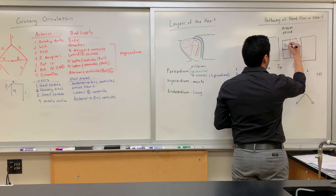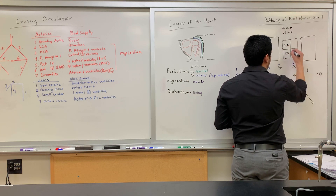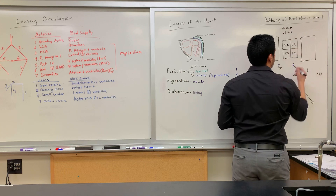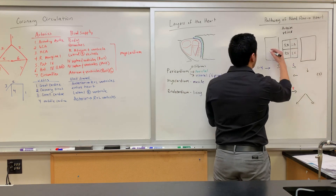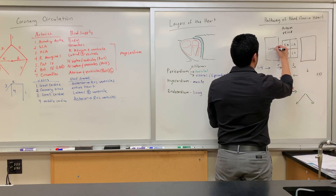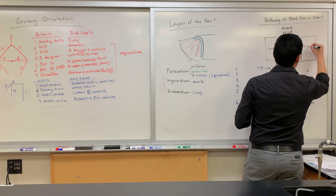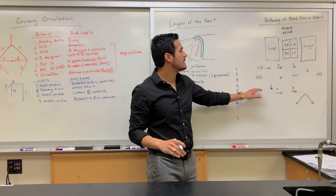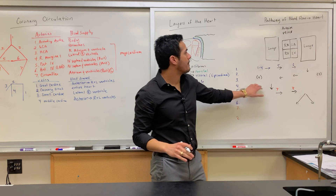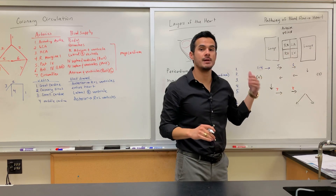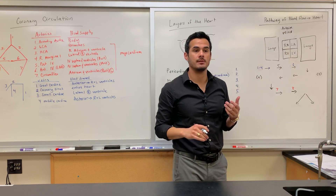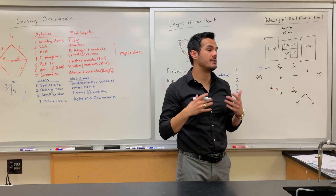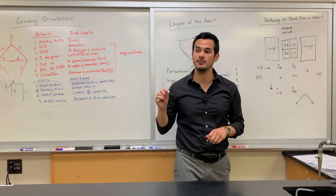You have the right atrium, the right ventricle, the left atrium, and the left ventricle. The boxes here represent the lungs. The right atrium is what receives deoxygenated blood from a couple of different sources.